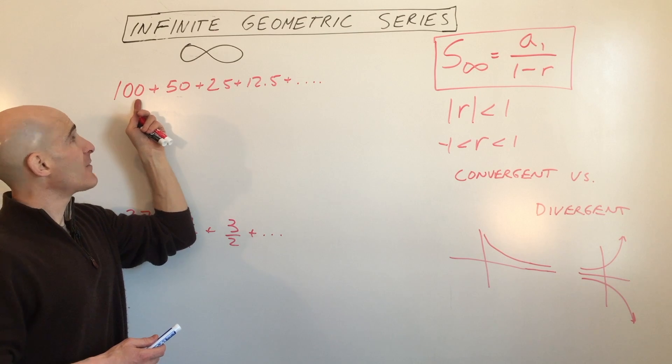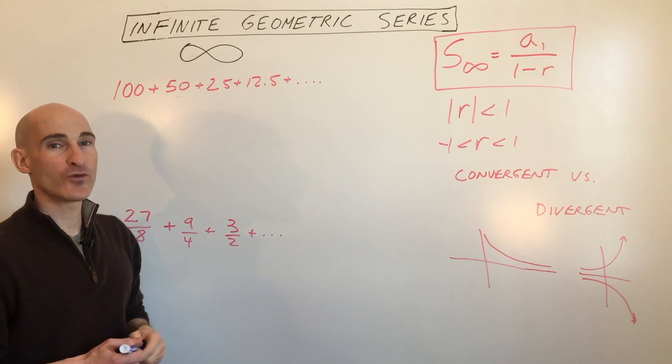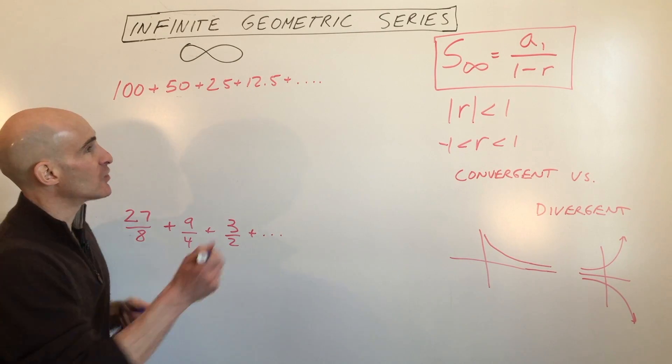Well, 50 divided by 100 is 1 half. 25 divided by 50 is 1 half. So you just take the term divided by the one before it to find the ratio. And so we're going to use this formula.